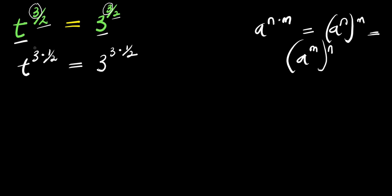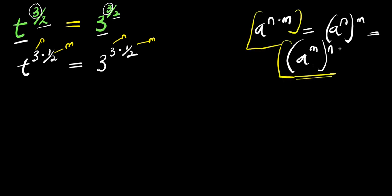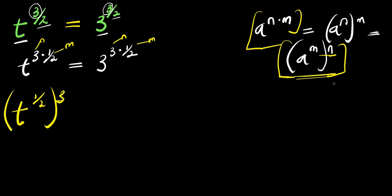So the 3 here is our n and this half is our m — the same thing on the right side. Based on this identity, we are going to apply the form where n is inside the bracket and n is outside. That means we are going to have t to the power of 1 over 2, with the 3 now outside. And this equals 3 to the power of 1 over 2, raised to the power of 3.